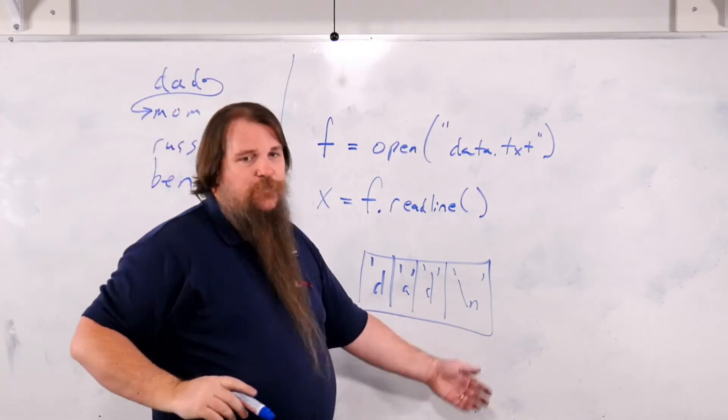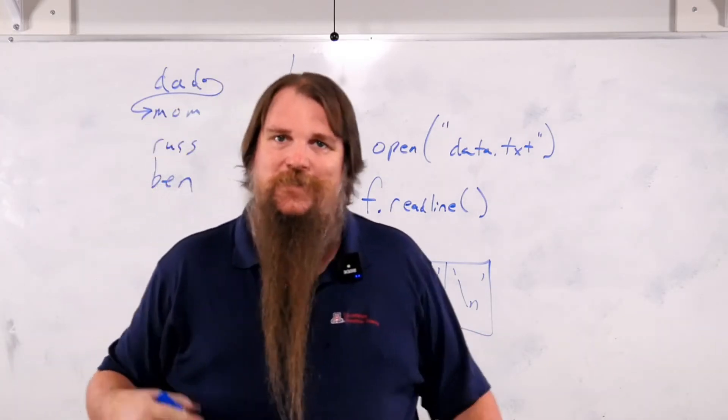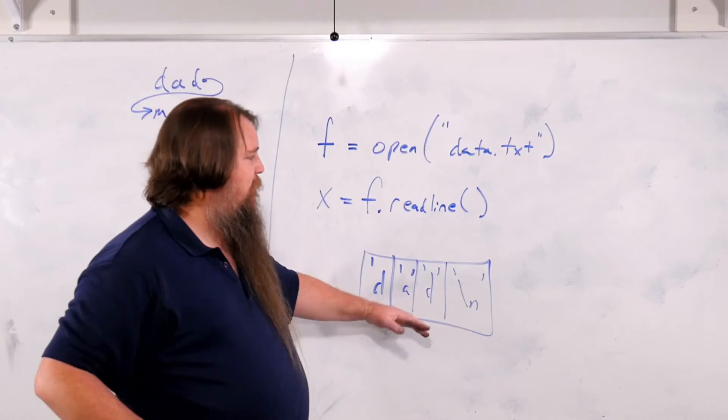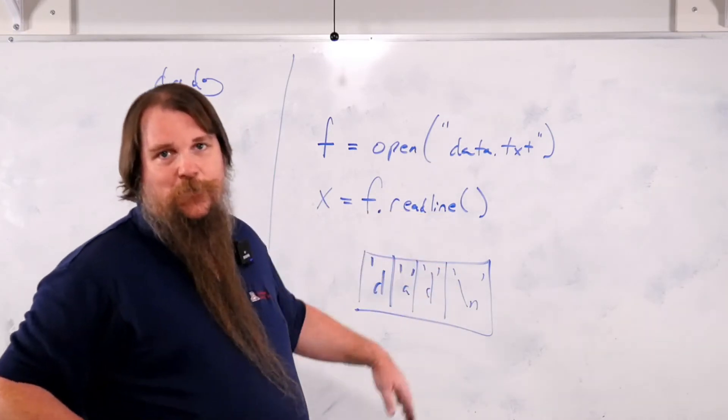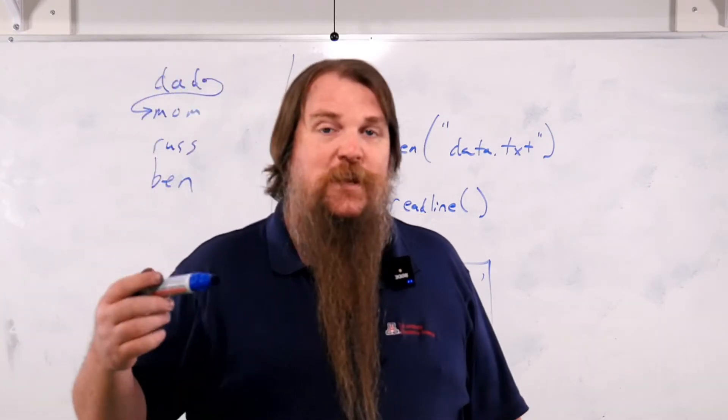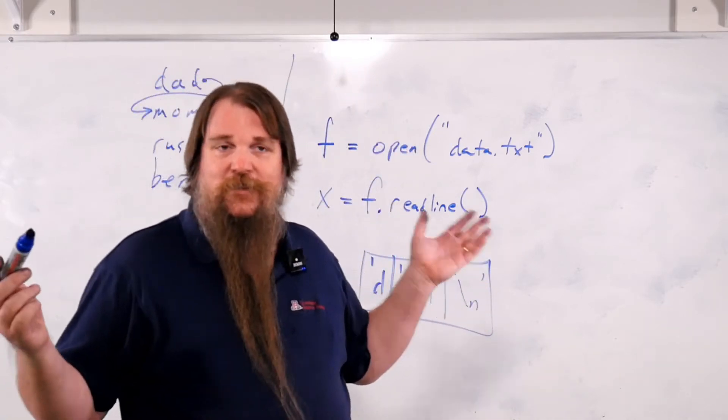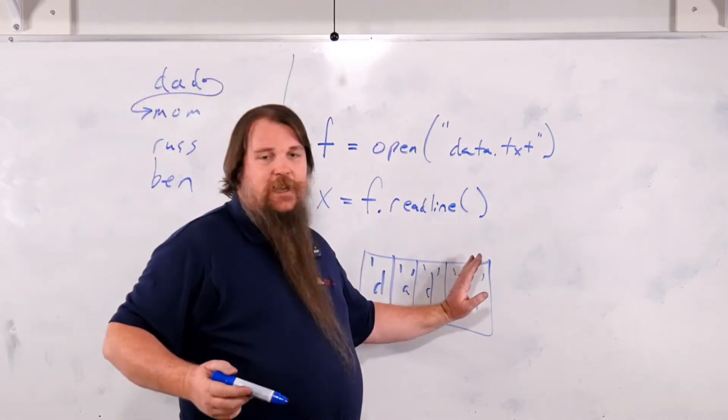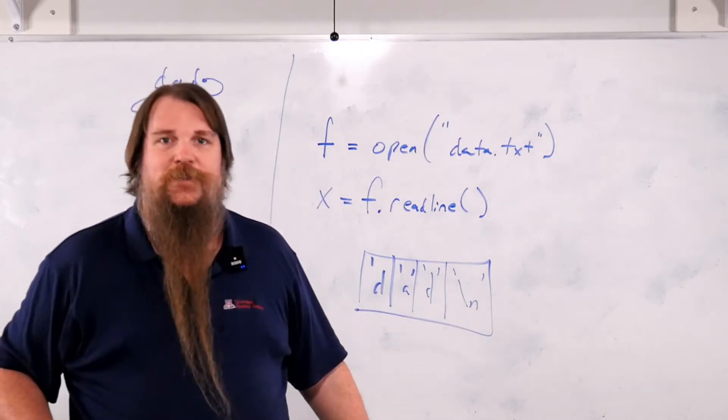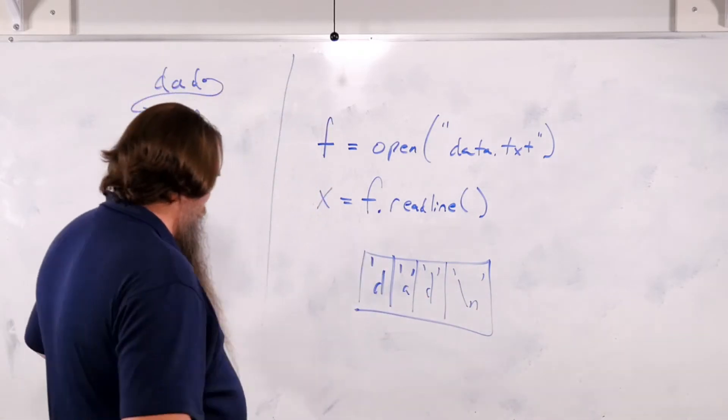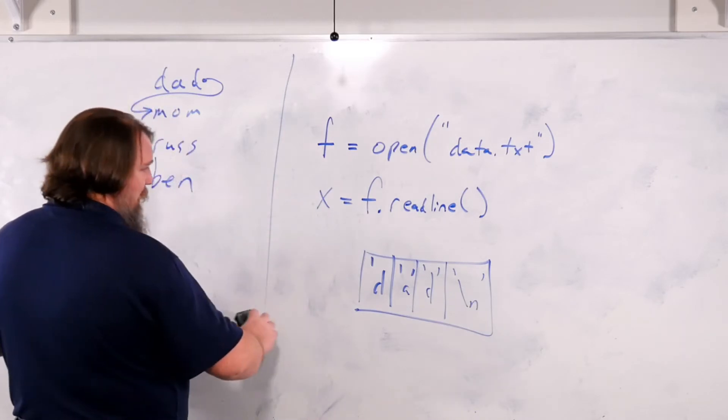Now, do you need to worry about this new line character? Depends on how you're going to process the line, but very often the first thing that we're going to do with anything we read from a file is that we may do a strip or a split on it. If you do a strip or a split on it, then don't worry. New line characters count as white space, and they'll be simply removed. However, if you're not going to do strip, then you should think about it.